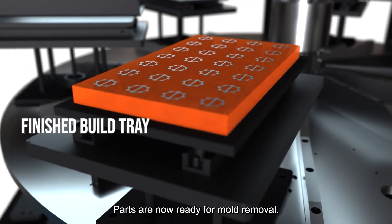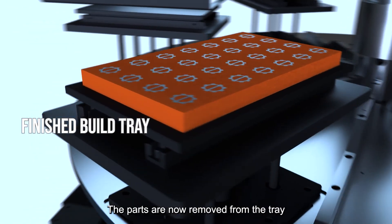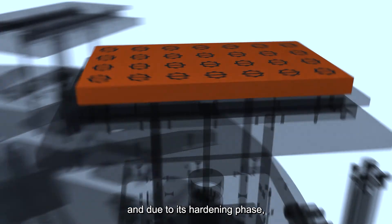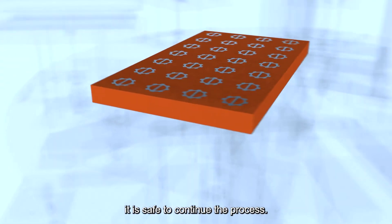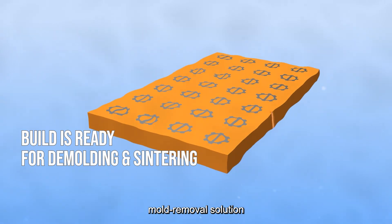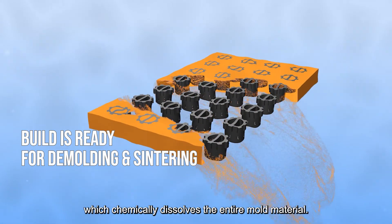Parts are now ready for mold removal and are removed from the tray. Due to the hardening phase, it is safe to continue the process. Parts are placed into a hands-free mold removal solution, which chemically dissolves the entire mold material.